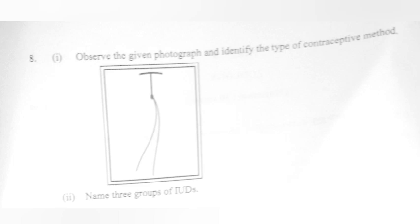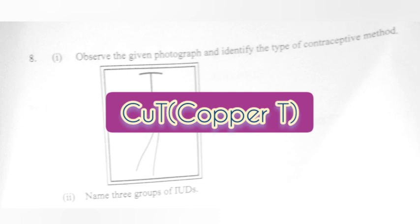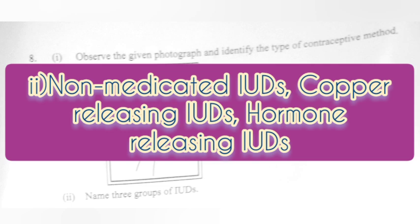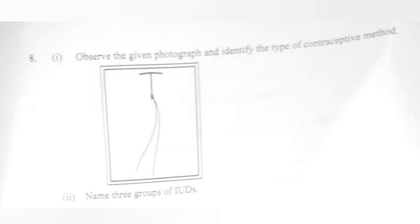Question 8. Part 1: Observe the given photograph and identify the type of contraceptive method. Answer: CUT or Copper T. Part 2: Name three groups of IUDs. Answer: Non-medicated IUDs, copper-releasing IUDs, and hormone-releasing IUDs.